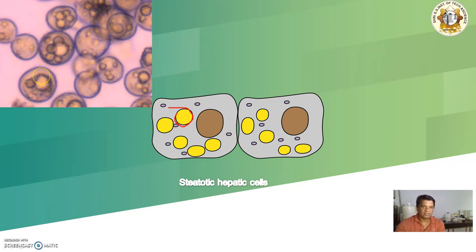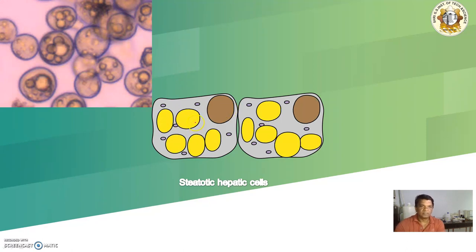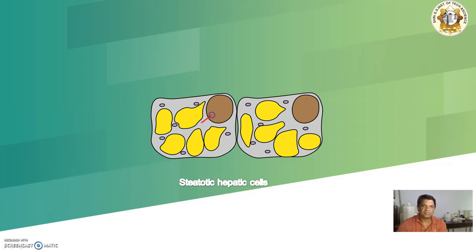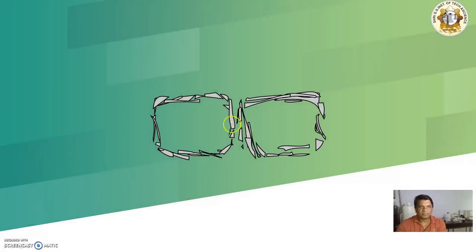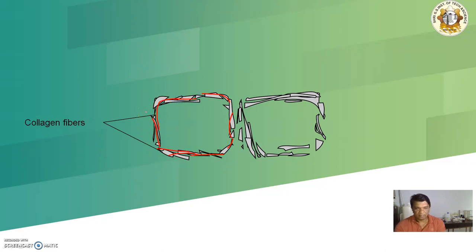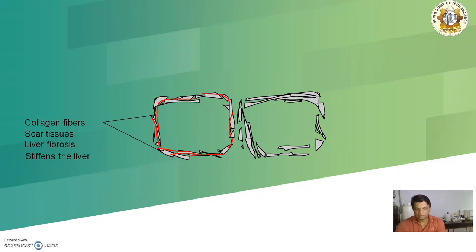This is a real image of steatotic hepatic cells. Here you can see the lipid globules have increased inside the hepatic cells. The growing lipid pushes the nucleus into one corner of the cell and will eventually damage the cell. After the cell is damaged, collagen starts getting deposited, and this collagen fiber stiffens the hepatic cells. Scarring begins and liver fibrosis takes place as the fiber gets deposited and the liver becomes stiffened.